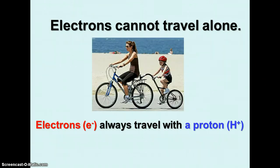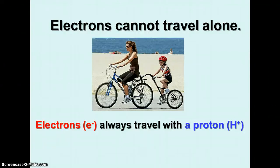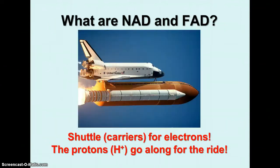One thing to realize is that electrons can't travel alone — they always travel with a proton, a hydrogen ion. This allows them to be passed along without a big change in charge throughout the system. So they're carried on molecules called NAD and FAD. NAD and FAD are shuttles or carriers for the electrons, and they also take the protons along for the ride.